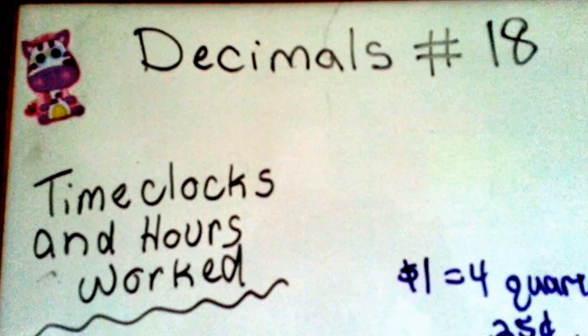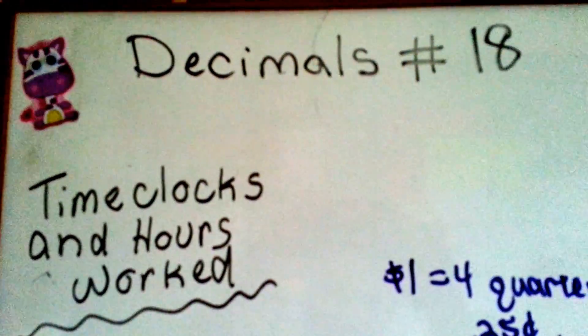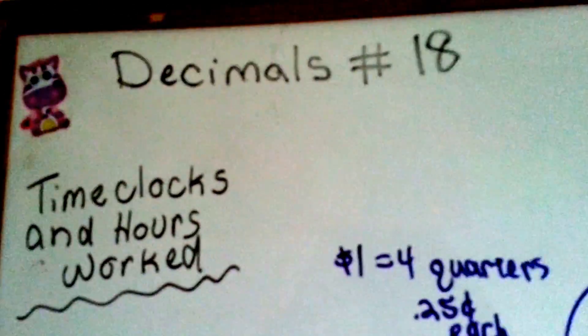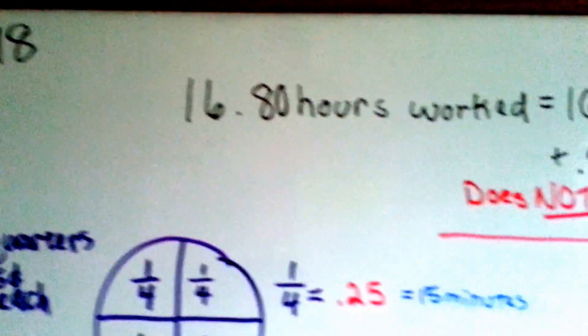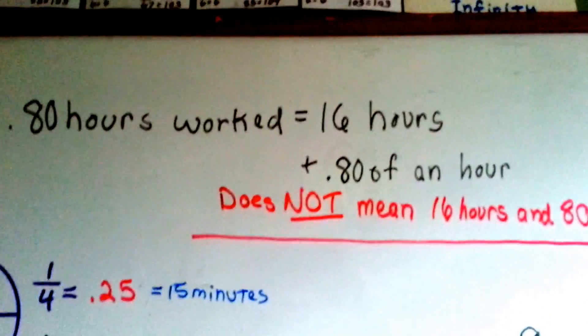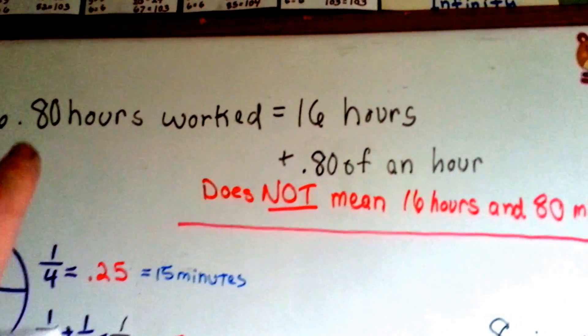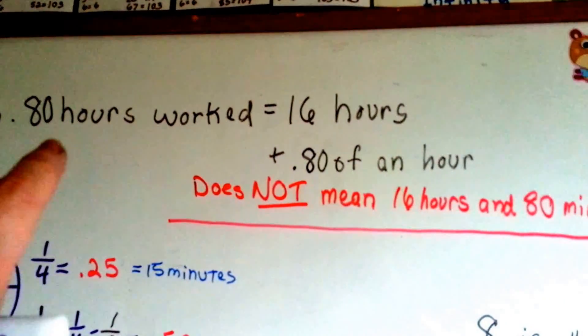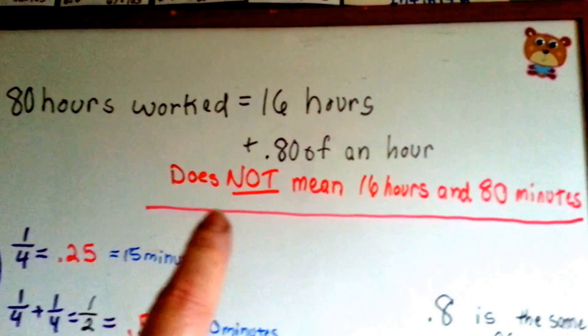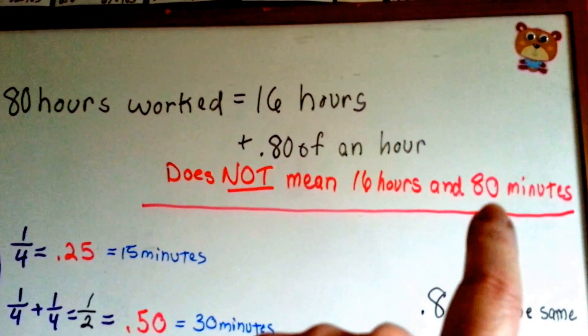Decimals number 18. Time clocks and hours worked. I felt compelled to make this video because I saw a post online that a woman said she couldn't explain to her co-worker who had worked 16.80 hours that she didn't work 16 hours and 80 minutes.